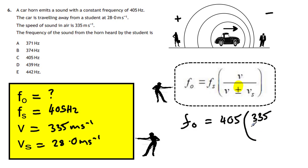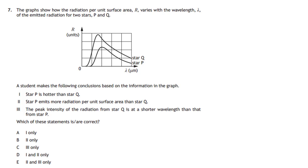F-naught equals 405 times the bracket, you're going to have V, the speed of sound, 335 divided by 335 plus 28. Now if you do that calculation, and you should be able to do it in your Casio calculator, you should get an answer on your calculator 373.76 hertz. Now to three significant figures, that will be 374 hertz. So the answer to the first question is going to be 374, which is question B.